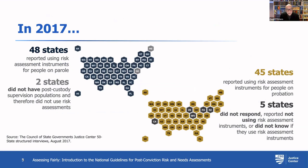In 2017, 48 states reported using risk assessment instruments for folks on parole — two states didn't have post-custody supervision populations. Forty-five states reported using risk and needs assessments for people on probation. At that time, five states didn't respond or reported that they were not using risk and needs instruments, or did not know if they were, which suggests they may not have been using them in a way that was useful for people on supervision.